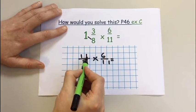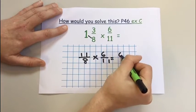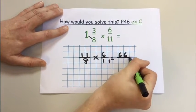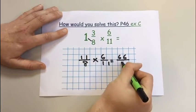Multiply the two numerators together. 11 times 6 is 66. 8 times 11 is 88.